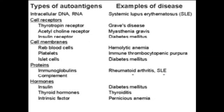The types of autoantibodies include those against intracellular DNA and RNA, cell receptors such as thyroid-stimulating hormone receptors in Graves' disease, acetylcholine receptors in myasthenia gravis, and insulin receptors in diabetes. In cell membrane components, we have antibodies against red blood cells causing haemolytic anemia, lymphocytopenia purpura, and related conditions.